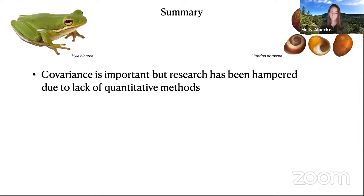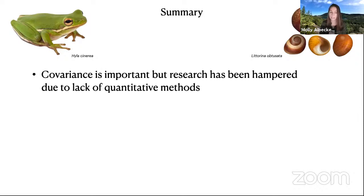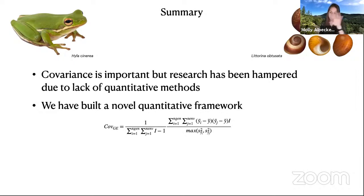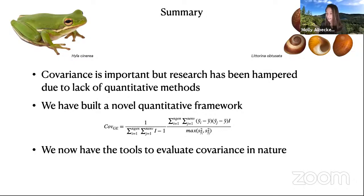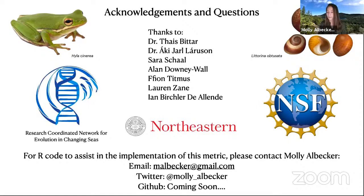Covariance is really important and we need to be studying it more, but research has been hampered because we lacked a way to measure it. We have now built a quantitative method to measure it in nature using reciprocal transplant and common garden data. We hope that with these tools we can investigate covariance across a variety of taxa and systems. Please contact me for any inquiries about code to implement this metric.